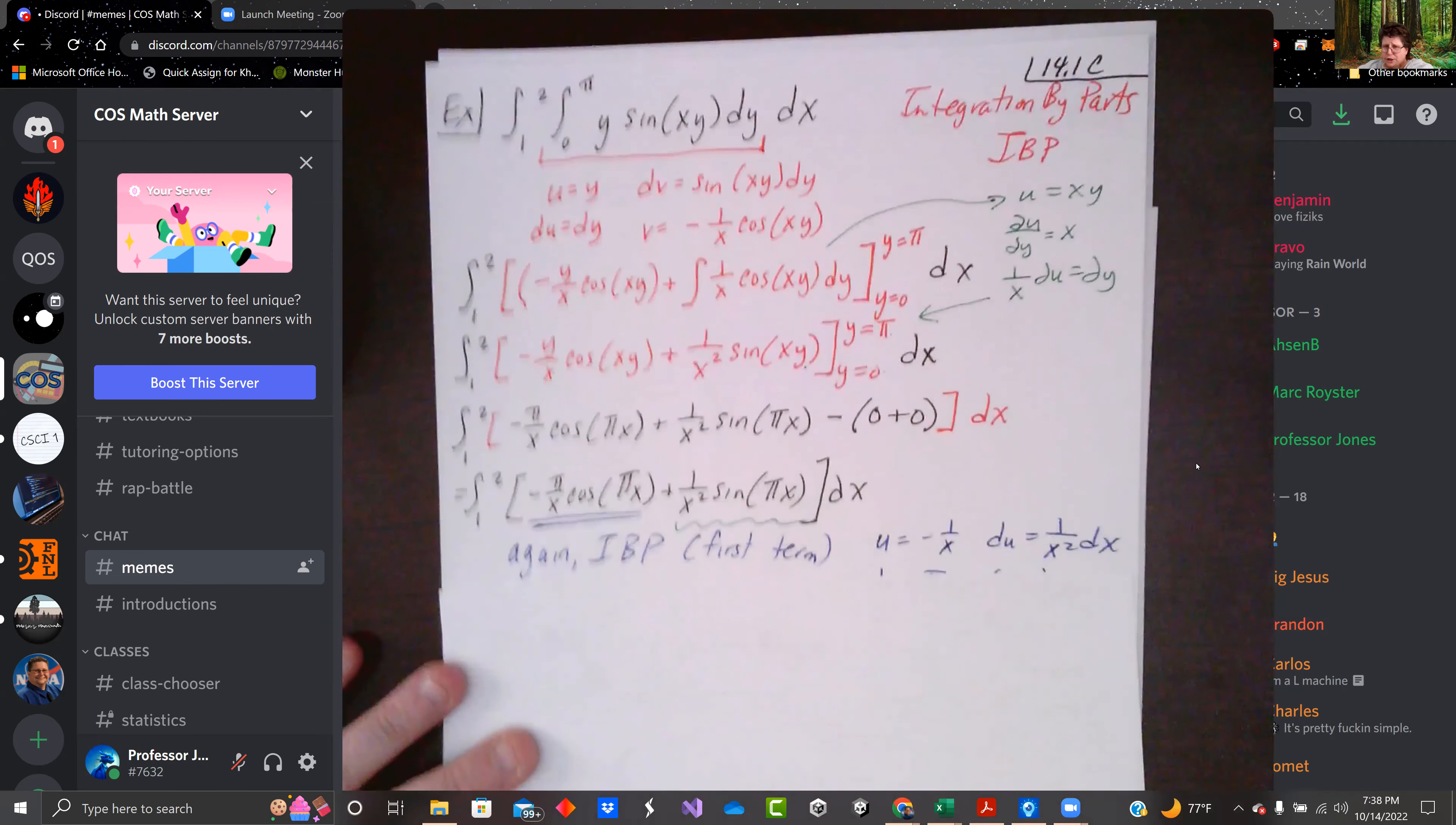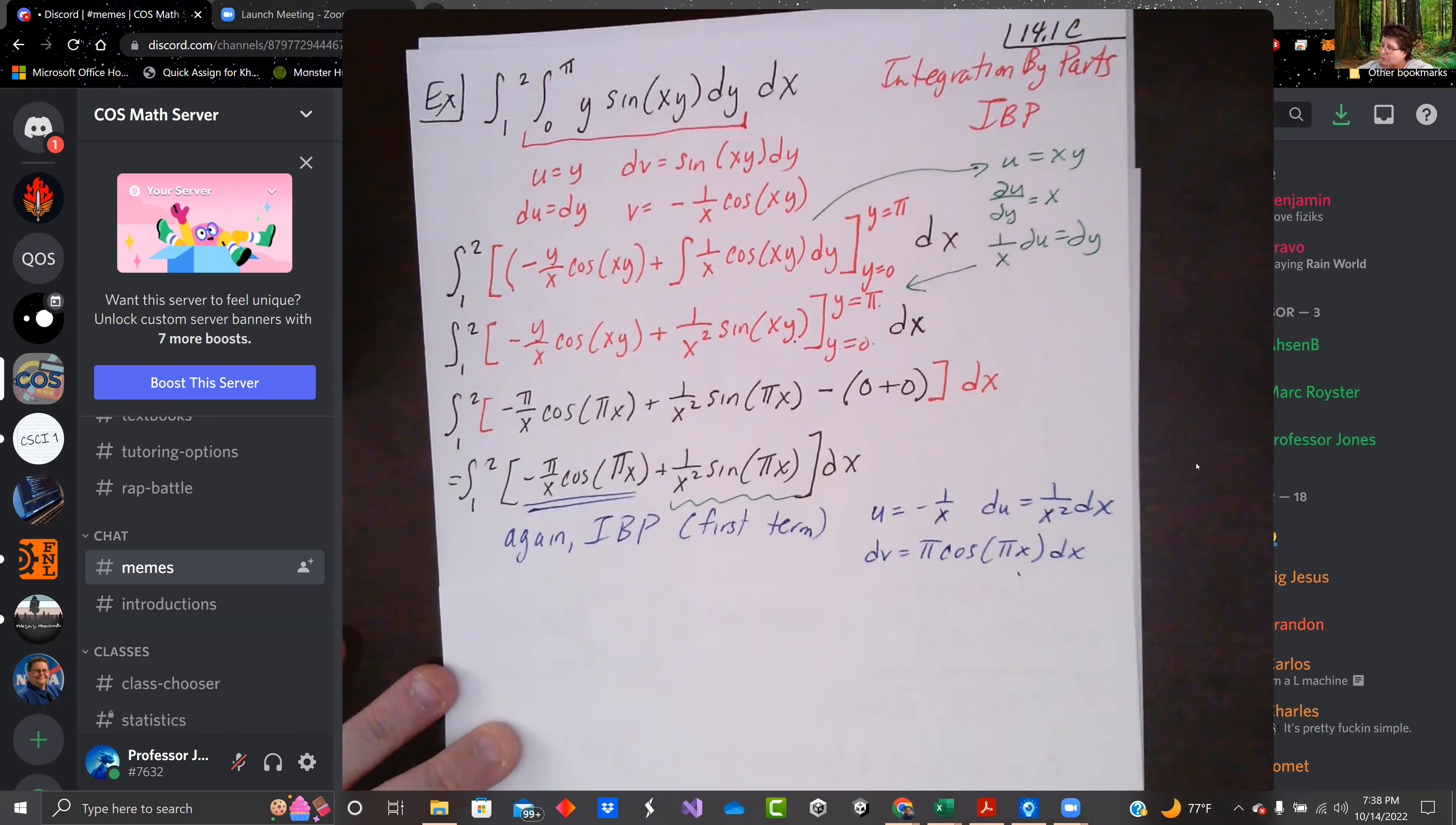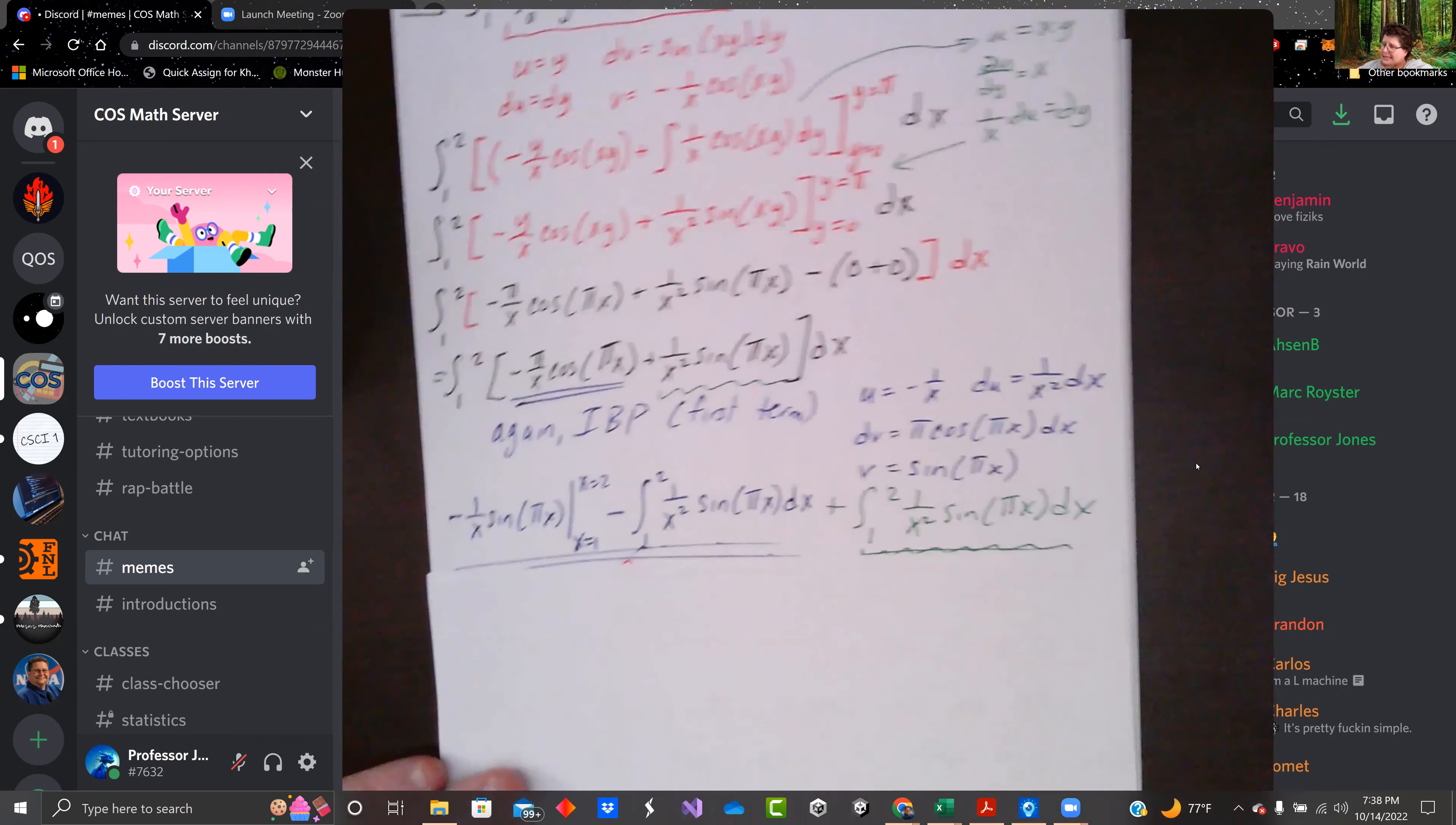It's another integration by parts. I did u equals negative one over x and du equals one over x squared dx. Oh, I'm sorry. That, of course. And then dv equals pi times cosine pi of x. This was just the first one I was showing.